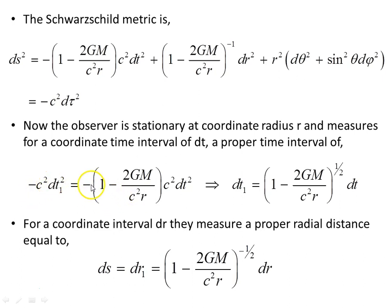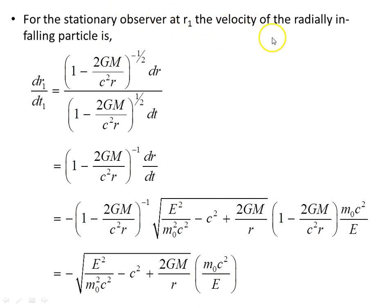For a coordinate interval dr, that same observer measures a proper radial distance dr1 from the metric, with dt = 0 and dθ = dφ = 0, giving ds² equal to dr² over (1 − 2GM/r·c²). So ds = dr1 is the proper distance interval measured by the observer at r1. The velocity of the radially in-falling particle according to this stationary observer at r1 is dr1/dt1, which we compute using the expressions for dr1 and dt1 found above. We also know dr/dt for the observer at infinity, and combining these we obtain the velocity as seen by the observer at r1.